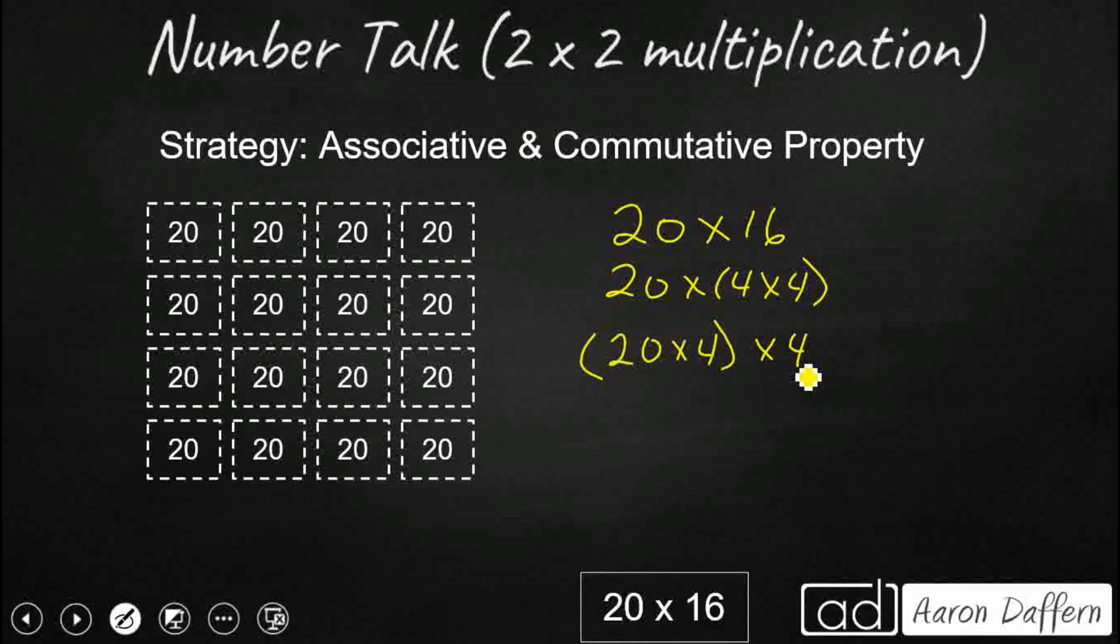So I want 20 groups of 4. You know what, I don't really want 20 groups of 4. I want to flip the order. I want 4 groups of 20. That's what this commutative property does. The associative property lets me make new groups. The commutative property lets me switch the order. I just want 4 groups of 20, which is what you see right here.